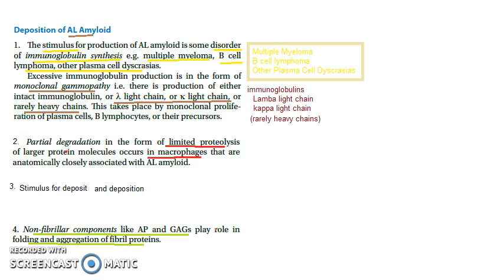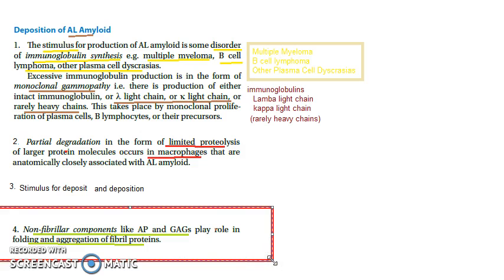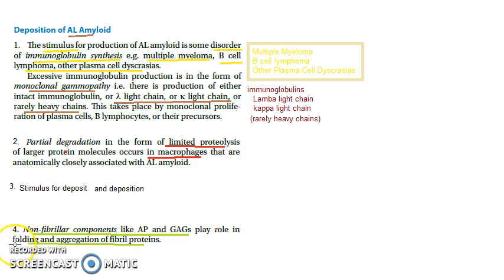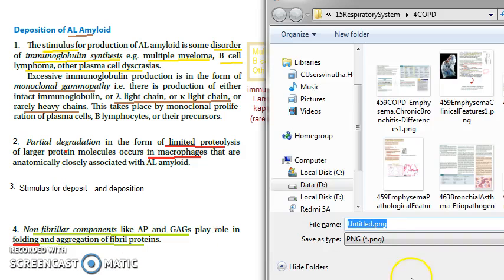The non-fibrillar components will stabilize these fibril proteins. The non-fibrillar proteins include the AP component — amyloid P component — and the GAGs, which are sulfated glycosaminoglycans. They play a role in the protein folding and aggregation of the fibril proteins. Folding is a very important word here.